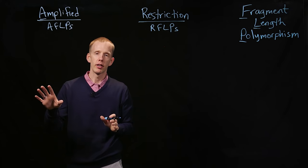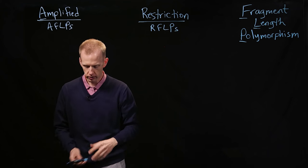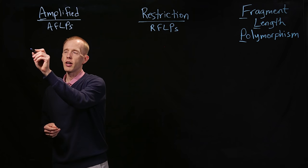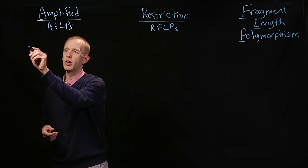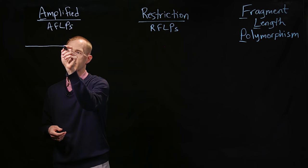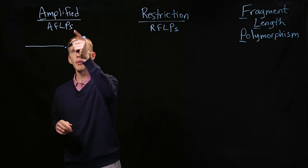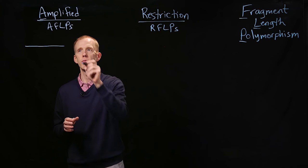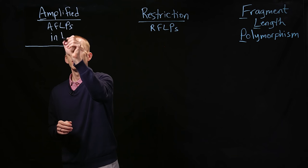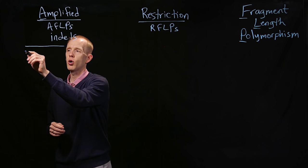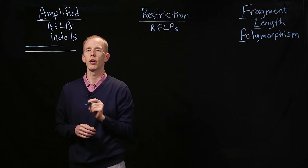So an Amplified Fragment-Length Polymorphism is a relatively easy one to understand. We can have two different individuals, or one individual, in the simplest case, who has, again, an INDEL. So Amplified Fragment-Length Polymorphisms rely on INDELs. So you might have an individual that's heterozygous, rather, for an INDEL.